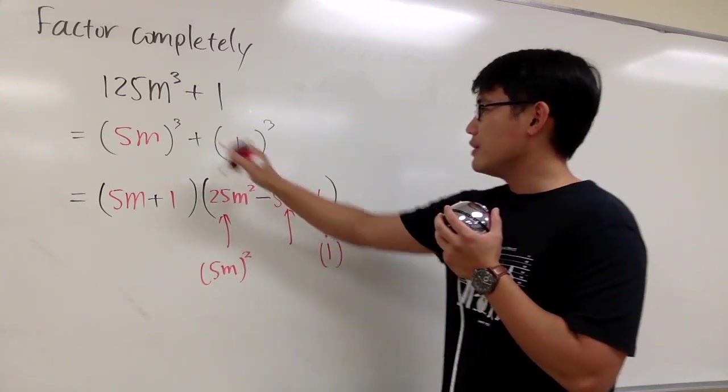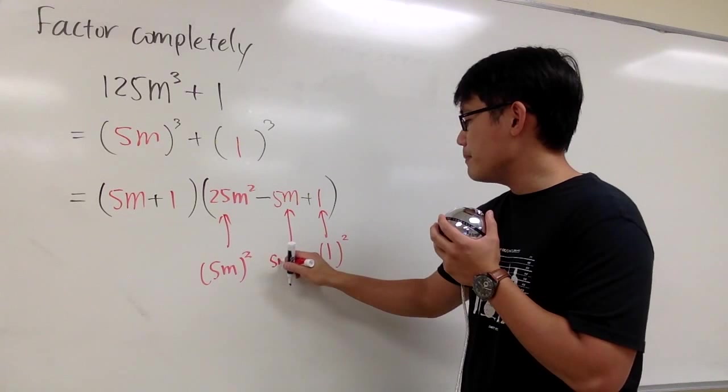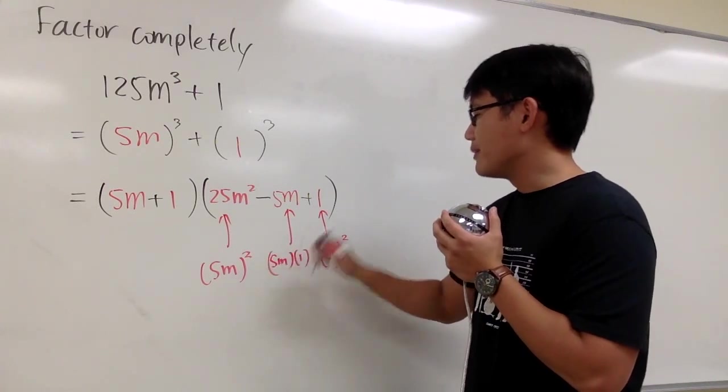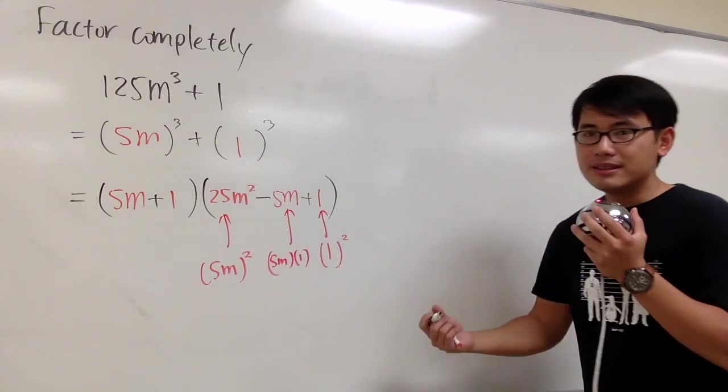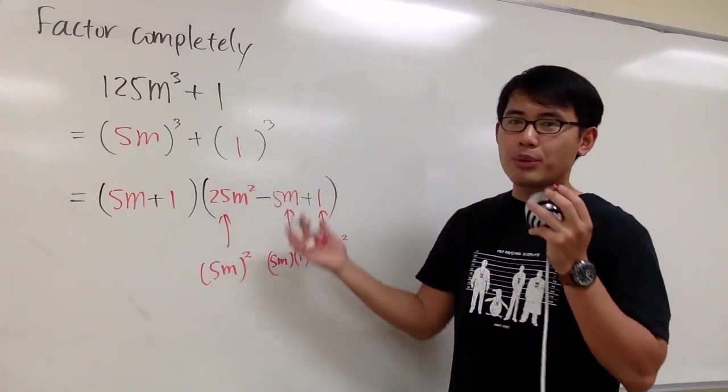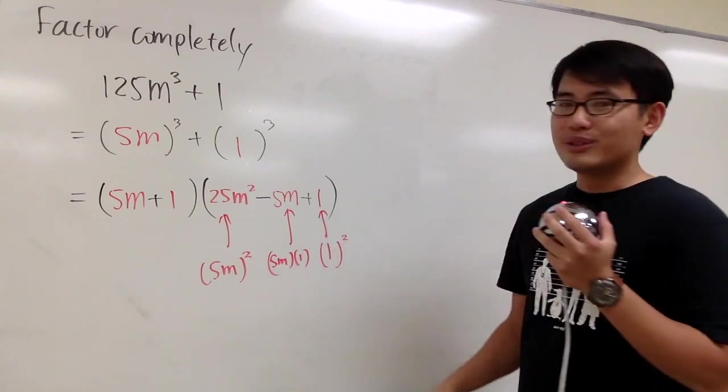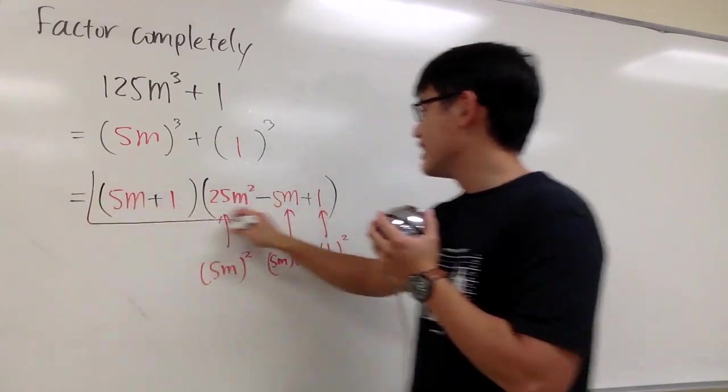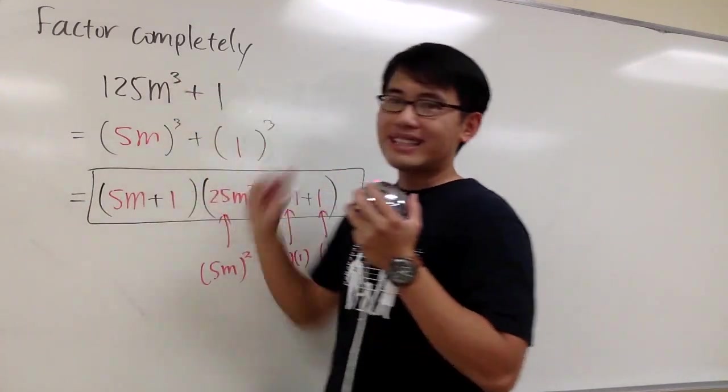The 5m is because of a times b, so it's 5m times 1. This is what we have to practice. First, remember the formula, then do a couple practices, and we'll get used to this. This is the factoring for that.